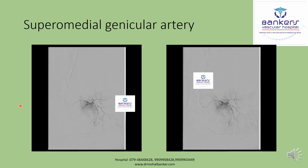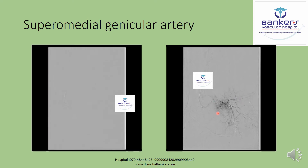Now let us look at the third genicular artery, called the supramedial genicular artery. With a microcatheter cannulated inside this supramedial genicular artery and contrast injected, you can see a blackish area here — that is called vascular blush or neovascularization. This hypervascularity is suggestive of inflammatory action and cytokine release at this site, classically seen on selective angiography. The pain marker is situated right here, and these inflammatory sites are also near the pain marker, confirming that the supramedial genicular artery is the culprit for cytokine release.